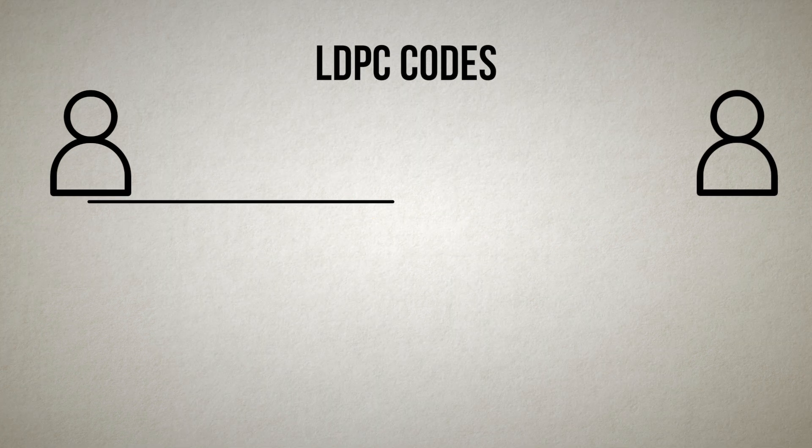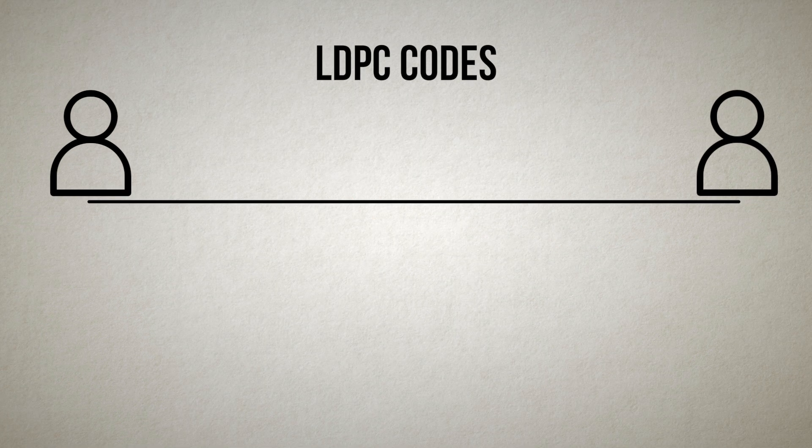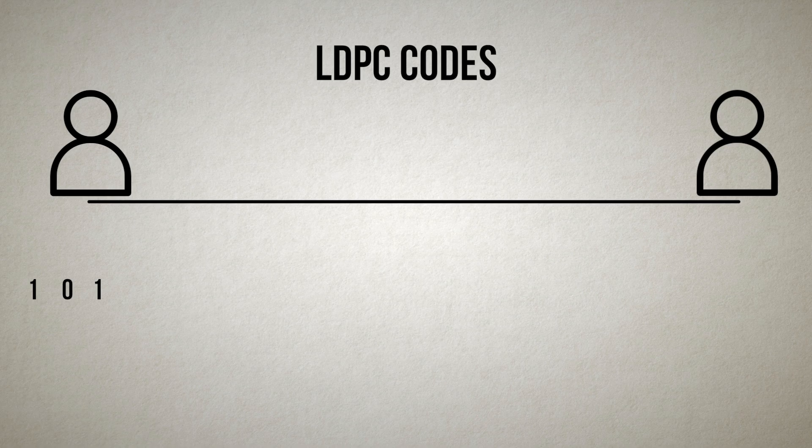To see this in action, let's do a very simple example. Now let's say our message is 101. Recall that we chose our subsets randomly to generate the code.